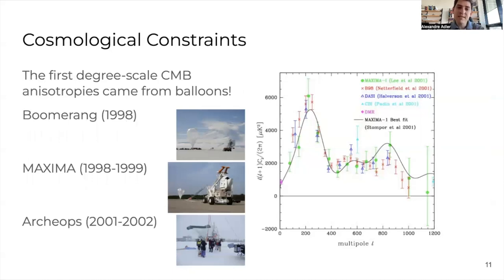But when they do, oh boy. The thing is, ballooning is actually how we got the first degree-scale CMB anisotropies. The twin experiments BOOMERANG and Maxima and Archeops a bit later were able to constrain the CMB anisotropies in temperature for the very first time.